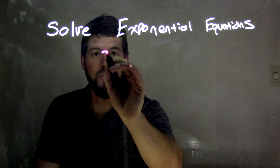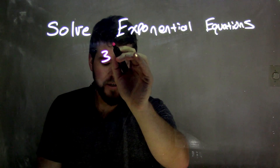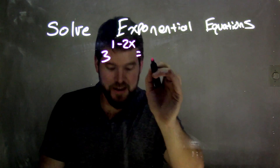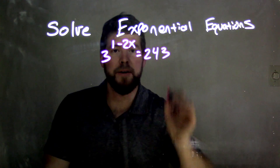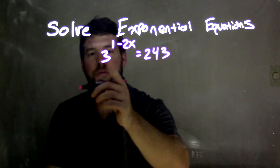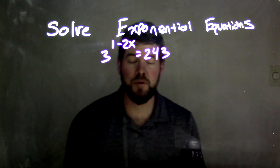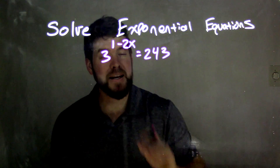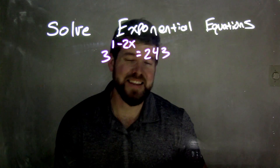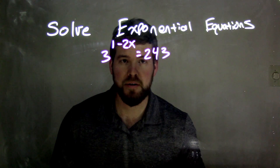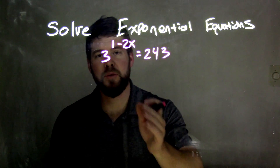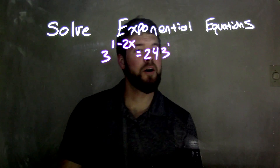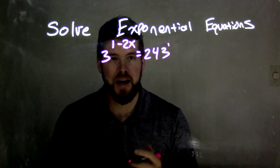Our equation is 3 to the 1 minus 2x equals 243. We know that if we can have the same base on both sides with some exponent, we can then set the exponents equal to each other. But the problem is 243 and 3 aren't the same number — there's an exponent of 1 on the left, but that doesn't help us.